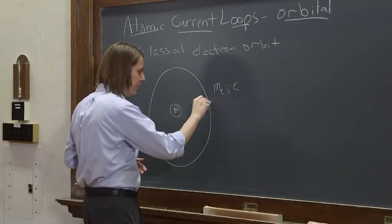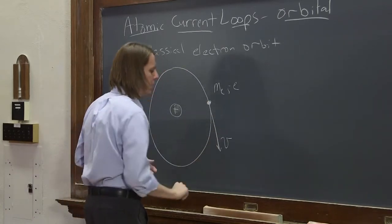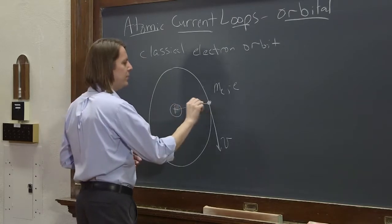And if it's going around this way, it has a velocity like that. And that is sitting at some radius r.